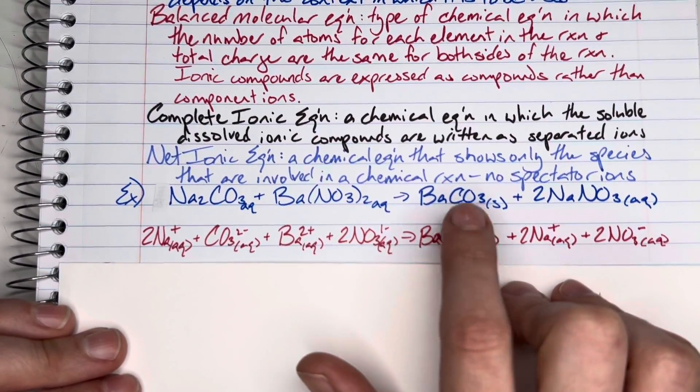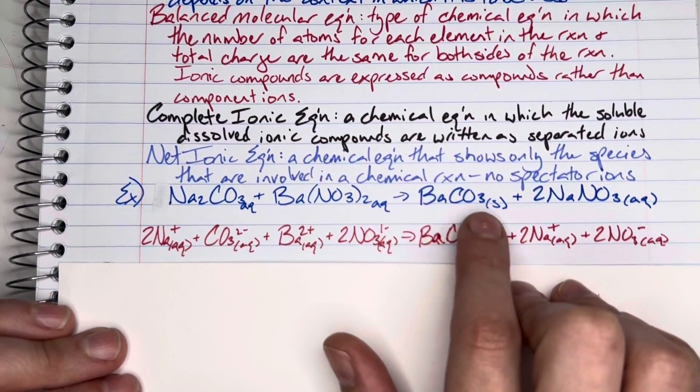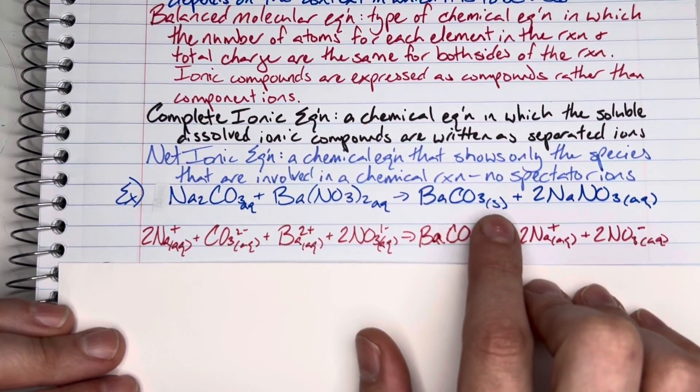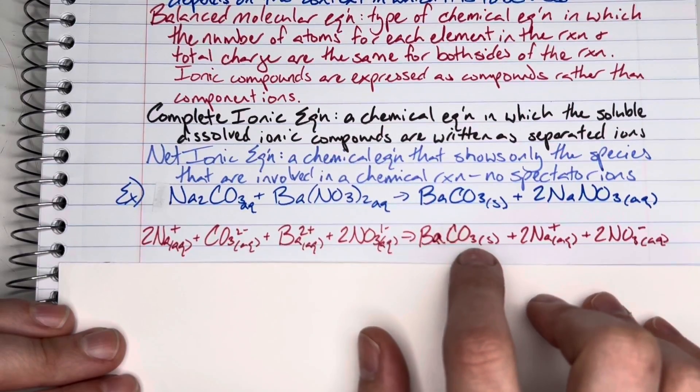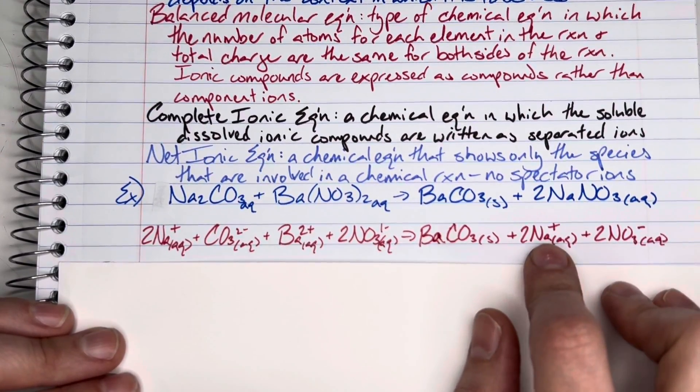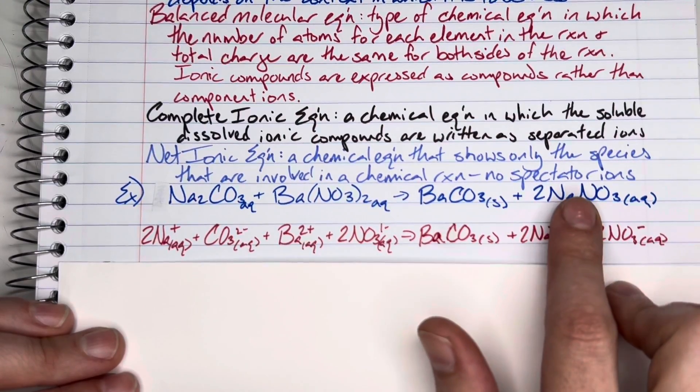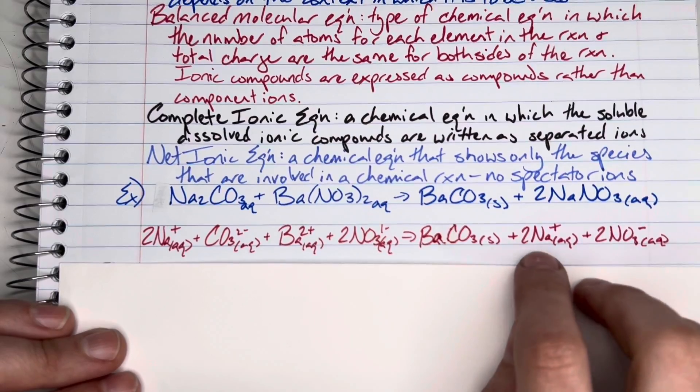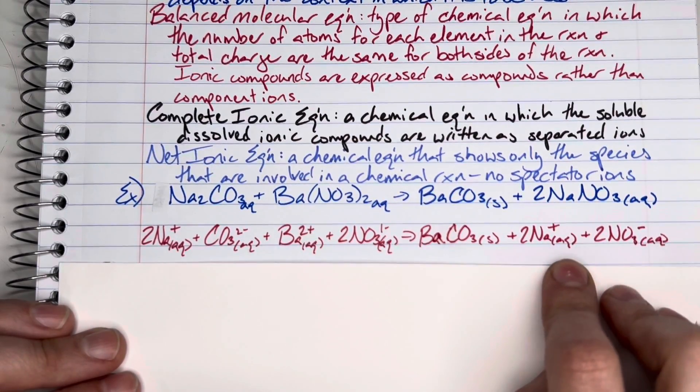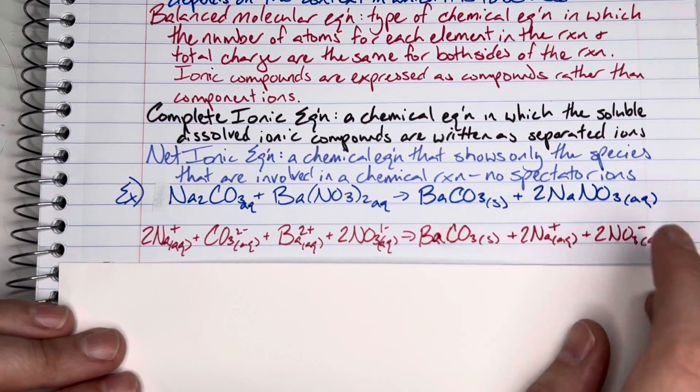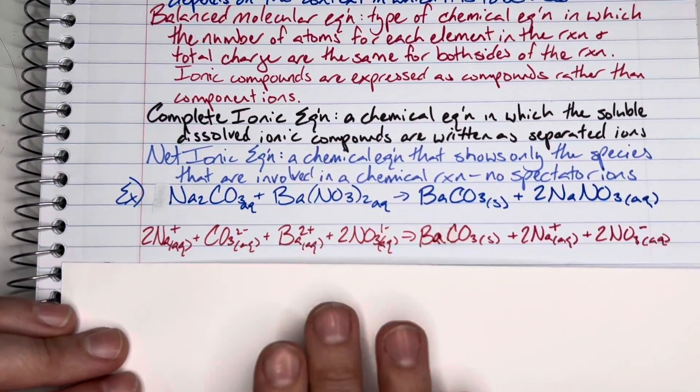Then I have my barium carbonate. My barium carbonate is no longer dissolved, so I do not break it into its constituent ions. I'm going to leave it alone, so barium carbonate stays as it is. Then I'm going to write my sodium nitrate split because it is still dissolved. My two sodium ions are present and my two nitrate ions are present, and those are aqueous, so they remain split.